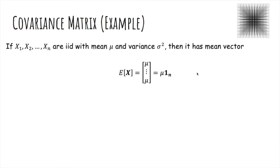So we'll do an example. If x1 through xn are iid with mean mu and variance sigma squared, we've seen earlier that the mean vector will just be the vector of all mu's, or just mu times the vector of all ones.